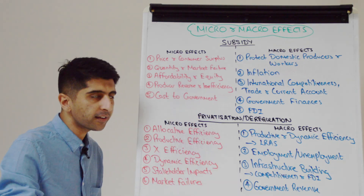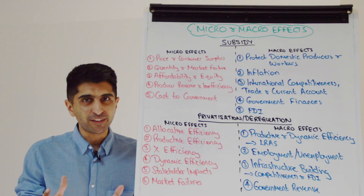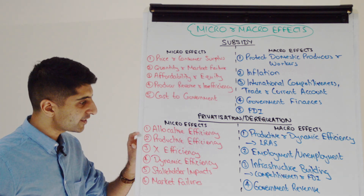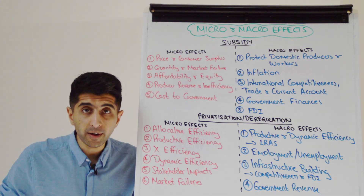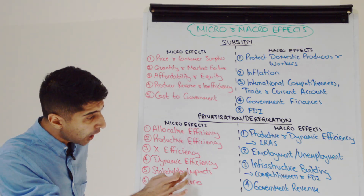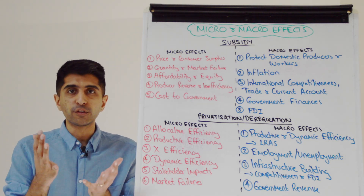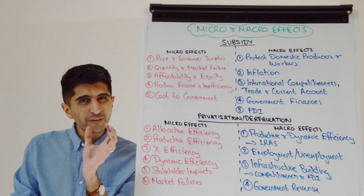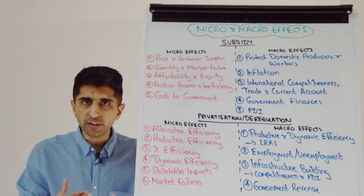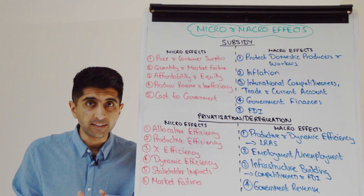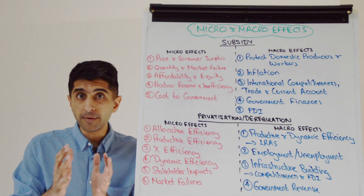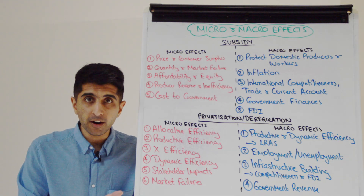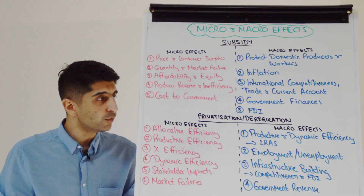What about privatization and deregulation as competition policies? The micro effects are simple: these are competition-promoting policies, so we can look at static efficiencies — allocative, productive, and X-efficiency. From there: lower prices for consumers, higher consumer surplus, high quantity, quality, and choice. We can also talk about dynamic efficiency and the reinvestment of profits. On the negative side, profit-motivated firms may cut costs — on wages, jobs, product safety, health and safety, or environmental quality.